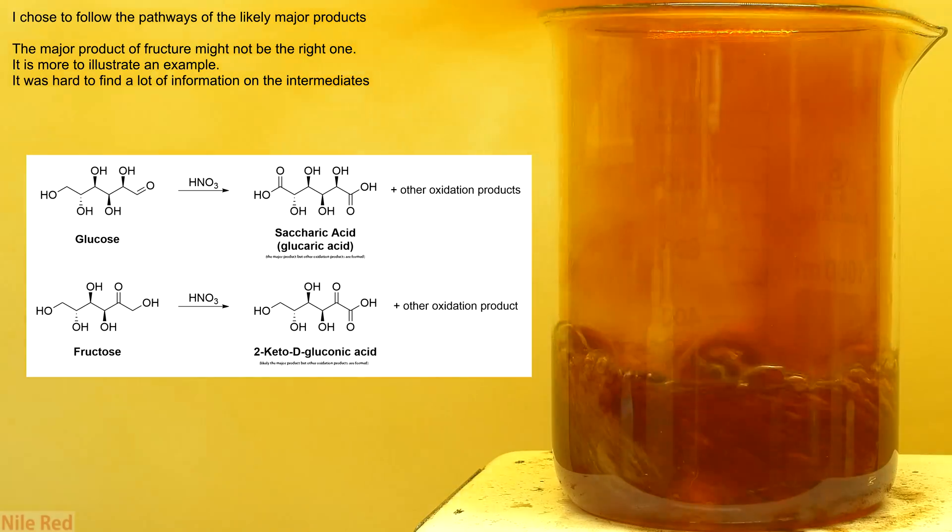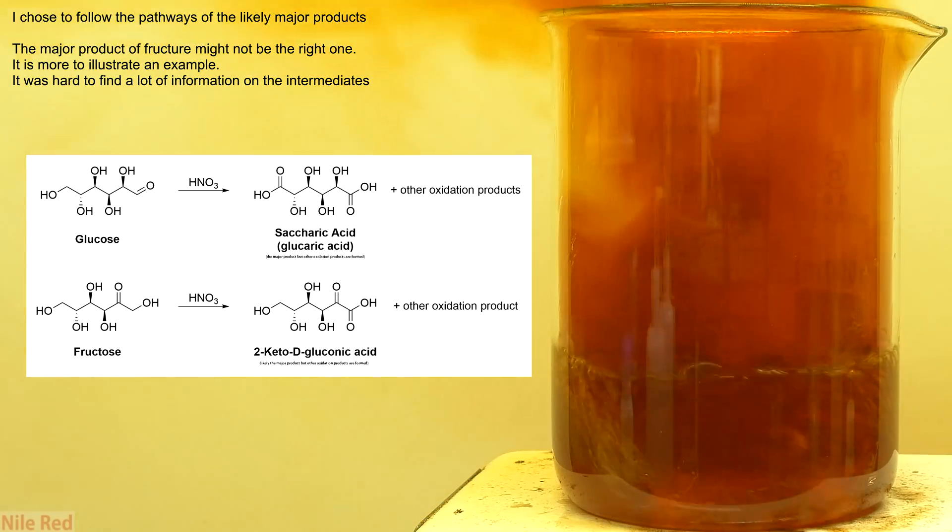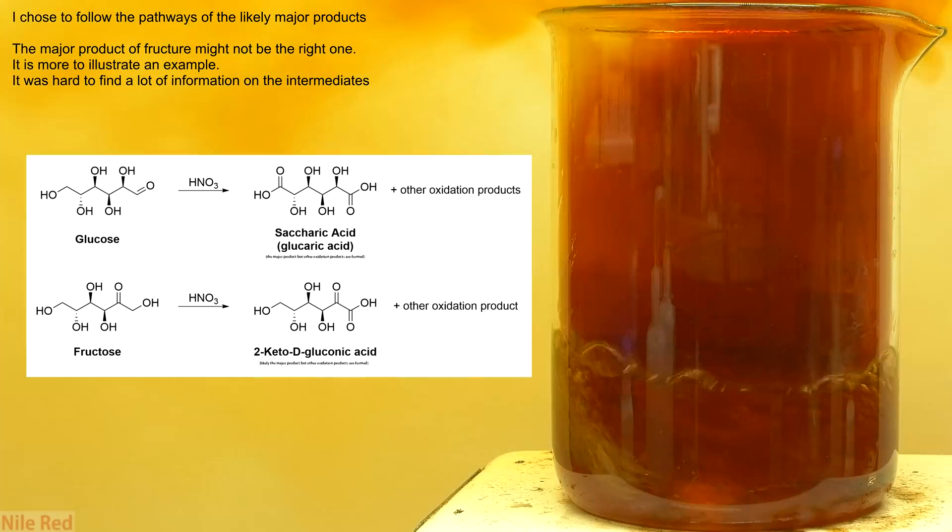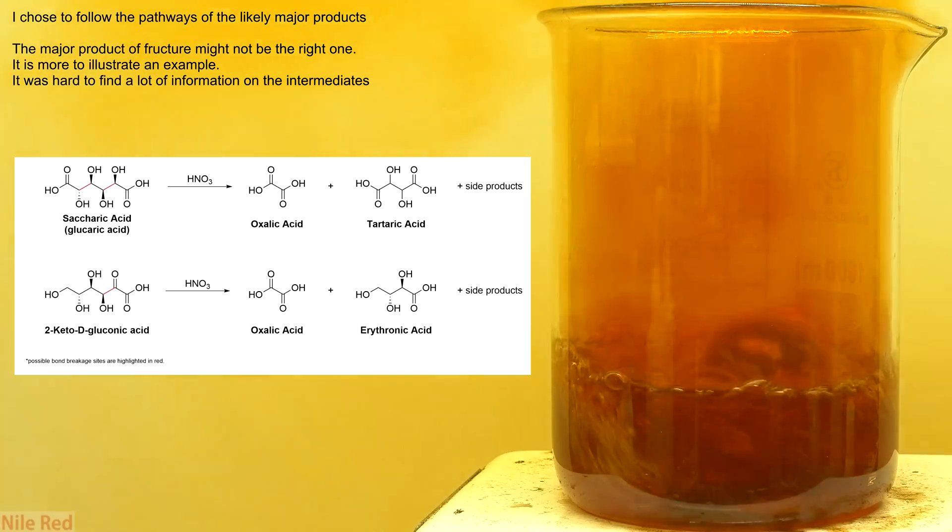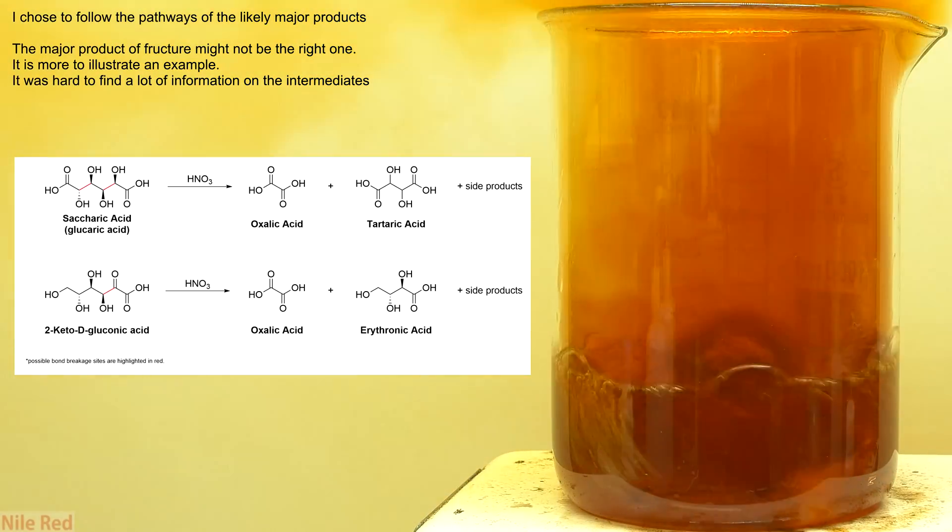Initially, the glucose is mostly oxidized by nitric acid to something called saccharic acid, and fructose is oxidized to 2-keto-D-gluconic acid or some other oxidized fructose derivative. These already oxidized sugars are then oxidized even further, which break some carbon-carbon bonds, and we ideally form oxalic acid and some 4-carbon side product.